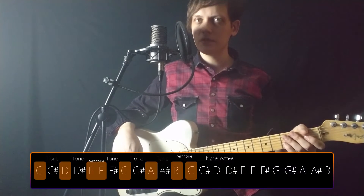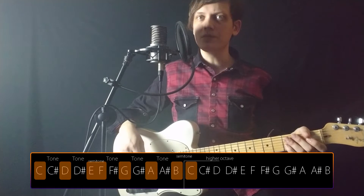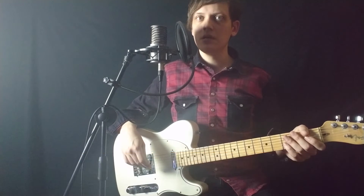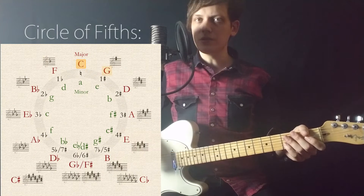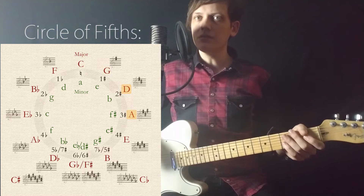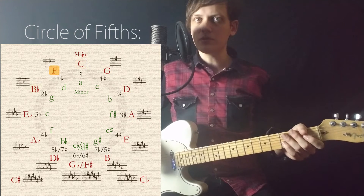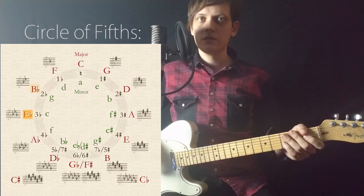Let's take a look at all of the keys again. We have C major with all the natural notes, then the sharp tonalities that move by fifth intervals when in relation to the C major scale, and the flat tonalities that move by fourths. This is why it's called the circle of fifths.